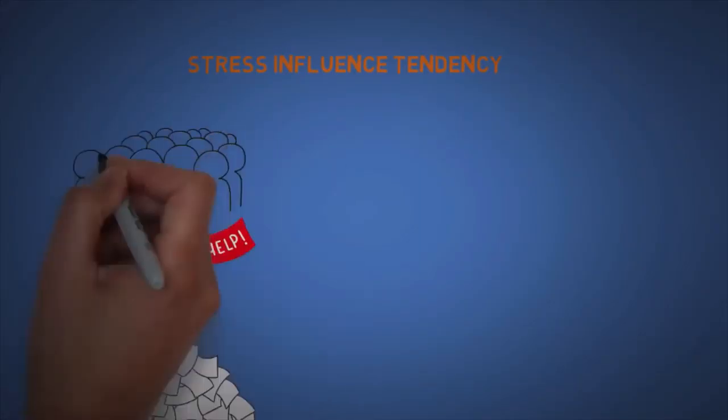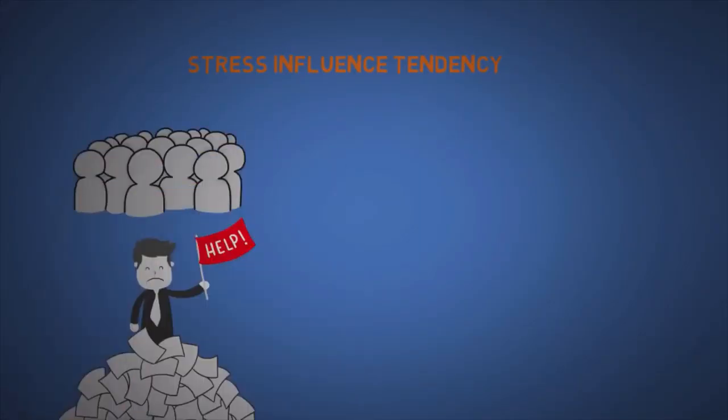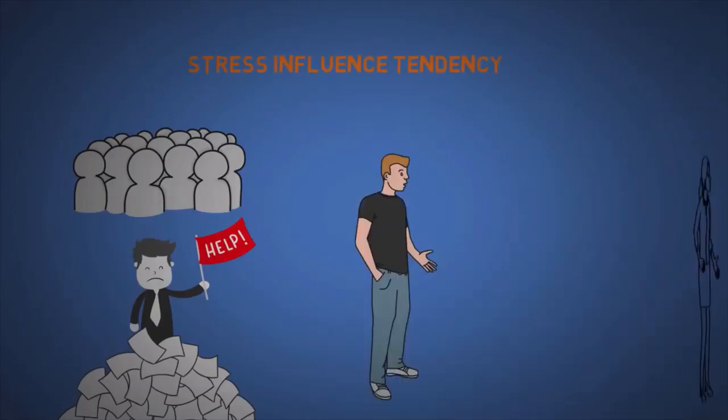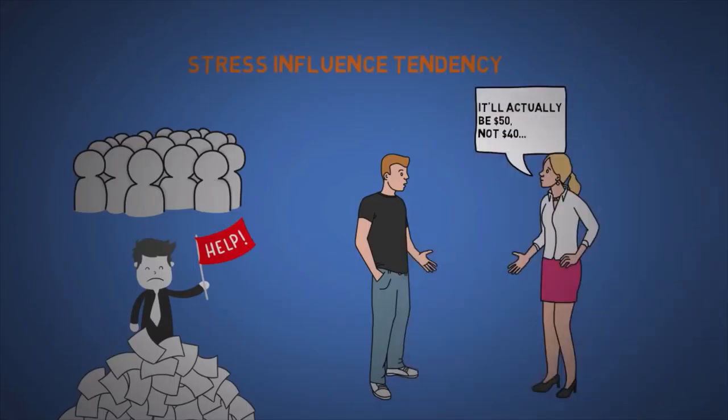The seventeenth is stress influence tendency. Stress can cause us to make bad decisions. Think of timeshares where they might put you in a tight room where you just want to get out. Or the times when you buy something and they say they're going to check with their manager first, then they come back 10 minutes later, you talk some more and then they say again, well let me go talk to my manager again. Then you say screw it, I'll just take it.